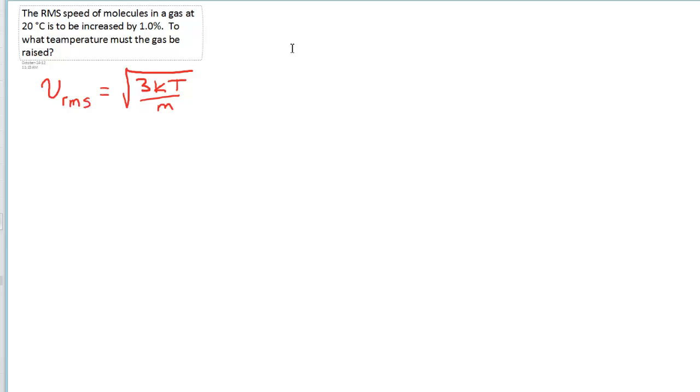So what you can always do in physics is make a ratio. Let's get all our constants isolated. Let's get that 3k over m by itself on the equation. So to do that we're going to square both sides. So now I get V RMS squared is 3kT over m.